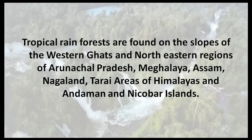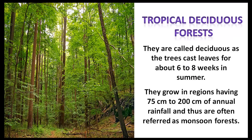Tropical rainforests are found on the slopes of the Western Ghats and northeastern regions of Arunachal Pradesh, Meghalaya, Assam, Nagaland, Tara areas of Himalayas and Nicobar Islands.